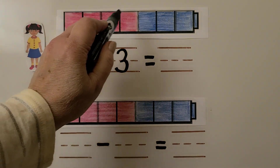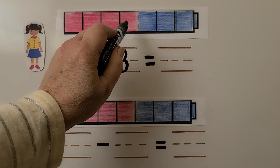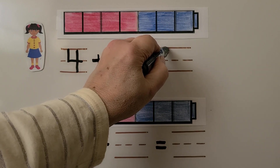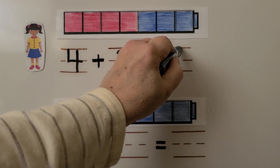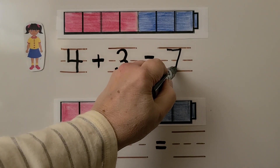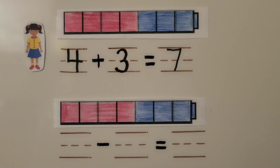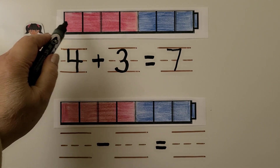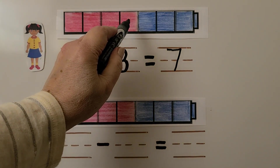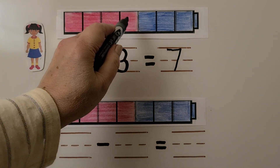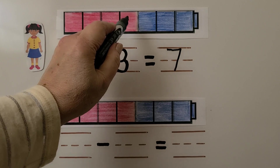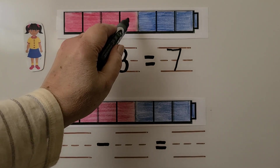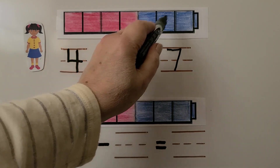One, two, three, four, five, six, seven. She has seven cubes now. If we know there are four cubes, we can start counting from four and count on: four, five, six, seven.